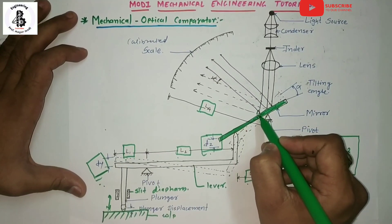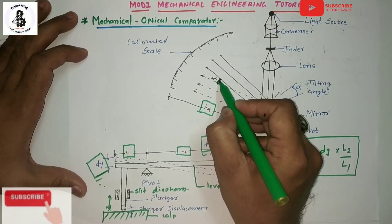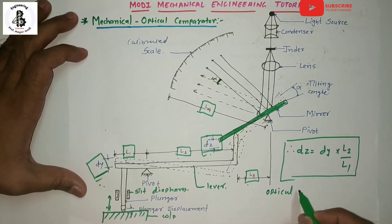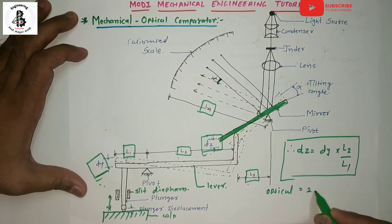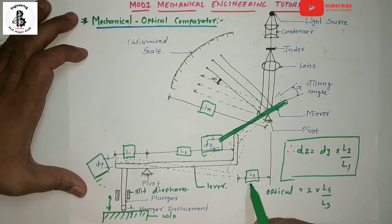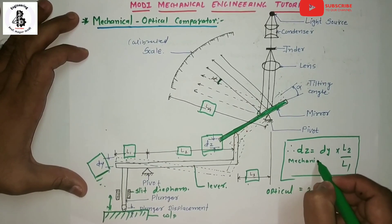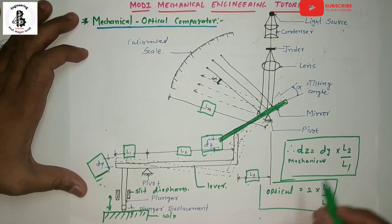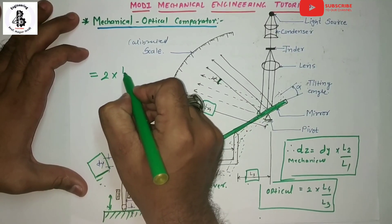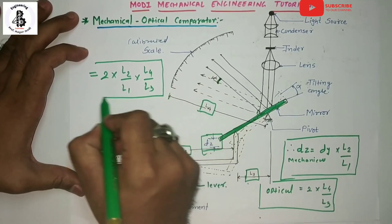Due to the movements of the mirror, changes are indicated on the optical calibrated scale. Due to the deflection of alpha, the reflection shifts by twice alpha as discussed earlier by the optical principle. The optical magnification equals 2 × L4 / L3, where L4 and L3 are related to optical magnification. The total magnification of the optical comparator is 2 × (L2 / L1) × (L4 / L3).